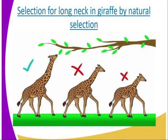The gradual accumulation of small variations from generation to generation over a long period of time leads to the emergence of new forms or species. The variations that Darwin regarded as the raw materials for the process of evolution have now been traced to changes that occur at the level of the gene or chromosome. These changes are called mutations.